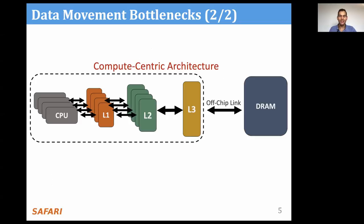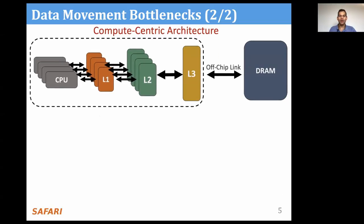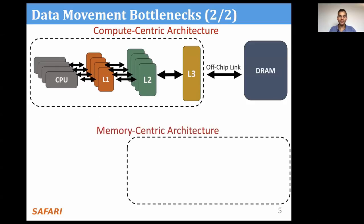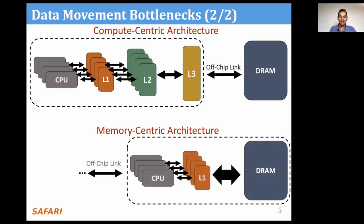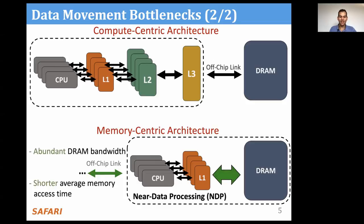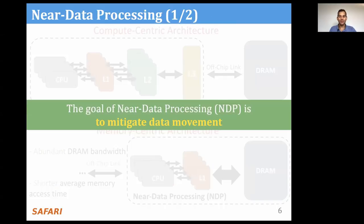Modern systems have evolved to include mechanisms that can alleviate the impact of data movement bottlenecks on application performance or energy consumption. Those techniques range from, for example, deep cache hierarchies and hardware prefetchers. We call these techniques compute-centric. However, such techniques often fail to mitigate data movement bottlenecks for many modern applications. Therefore, a solution is the so-called memory-centric architectures. A memory-centric architecture mitigates data movement bottlenecks by moving computation nearby to the DRAM chip itself. Near-data processing, or NDP, is a good example of a memory-centric architecture.